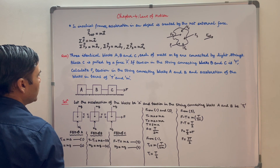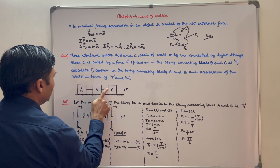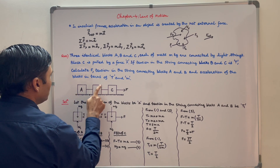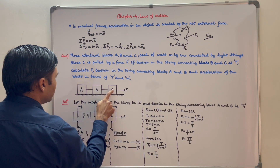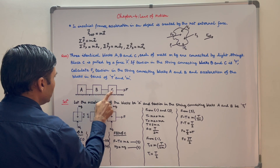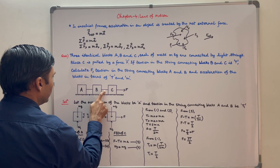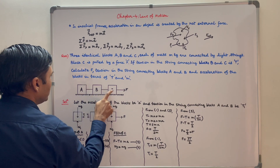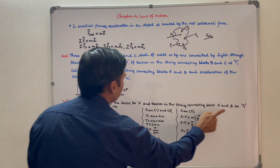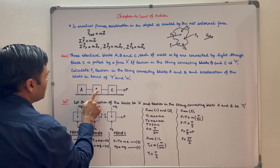First point to be noted here is these blocks are identical and these strings are taut. So these blocks will move with same acceleration. If the acceleration of these blocks were different, then these strings would not remain taut. Suppose the acceleration of these blocks is A and tension in this string is T1. We will draw FBD of these blocks.